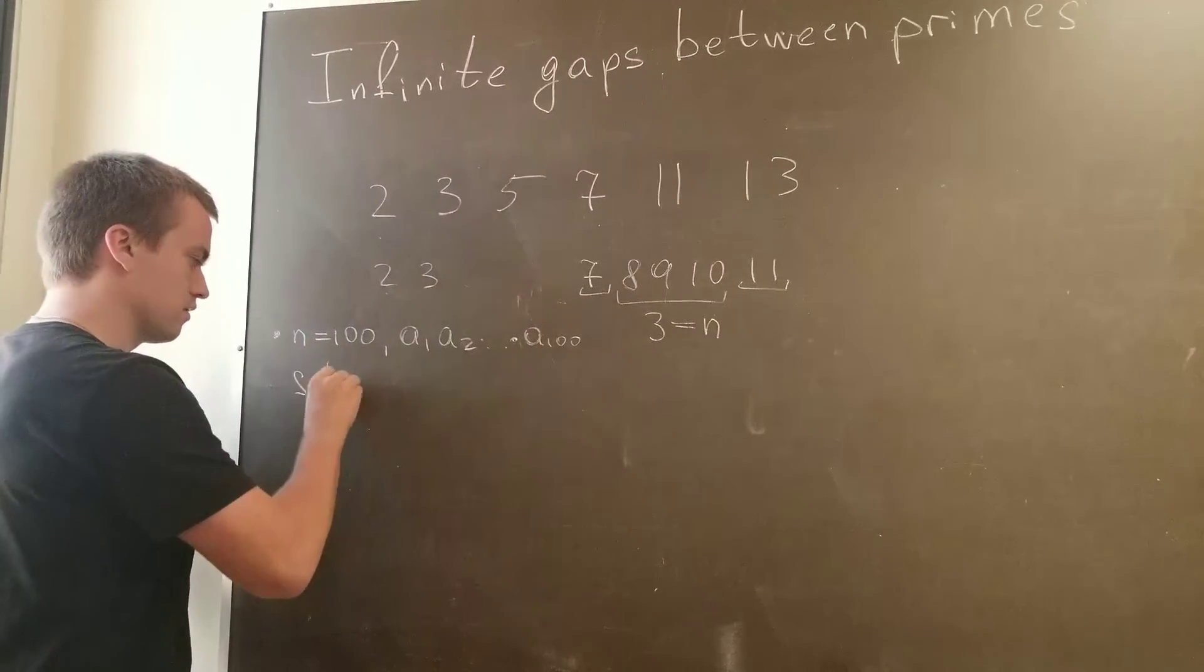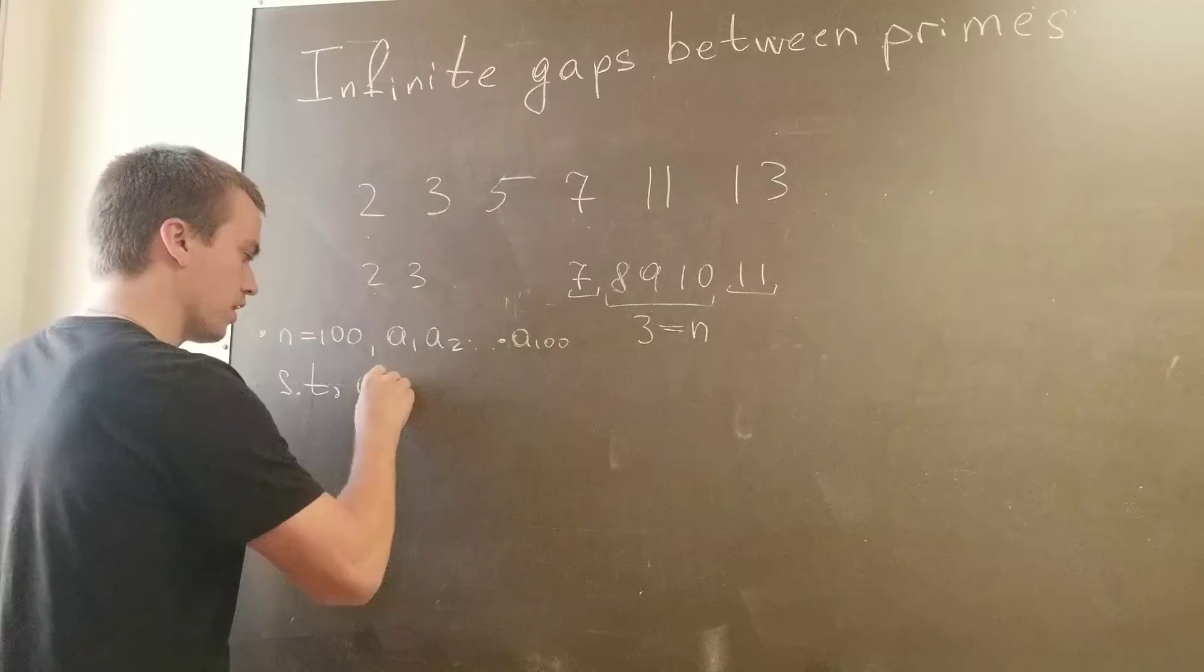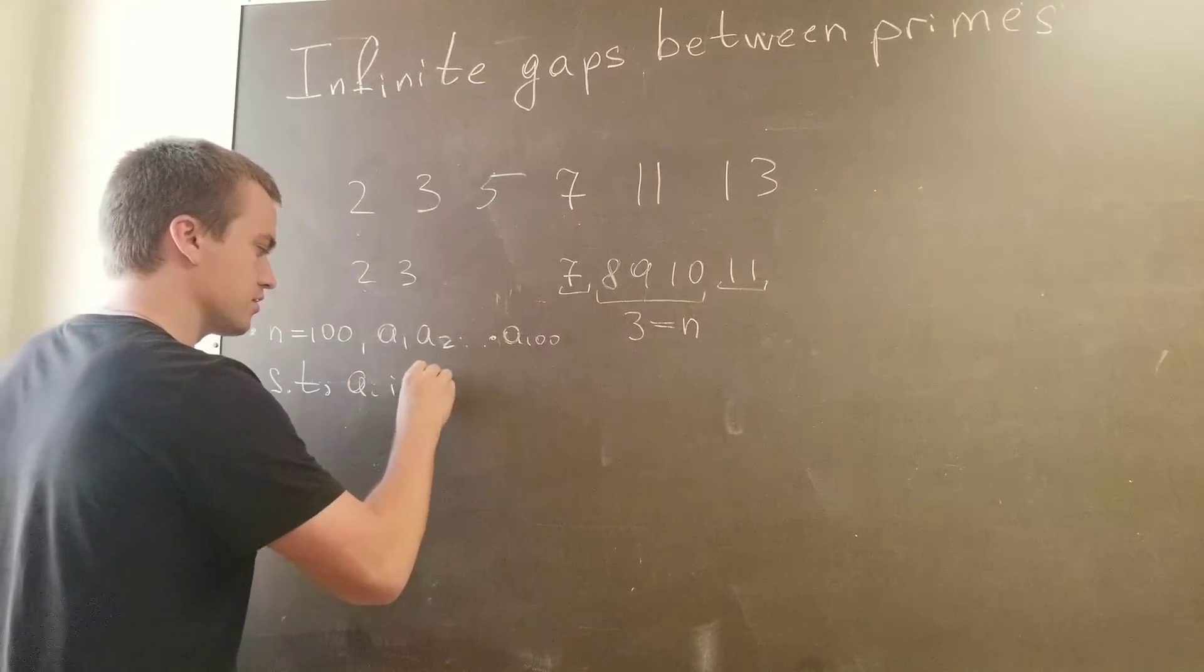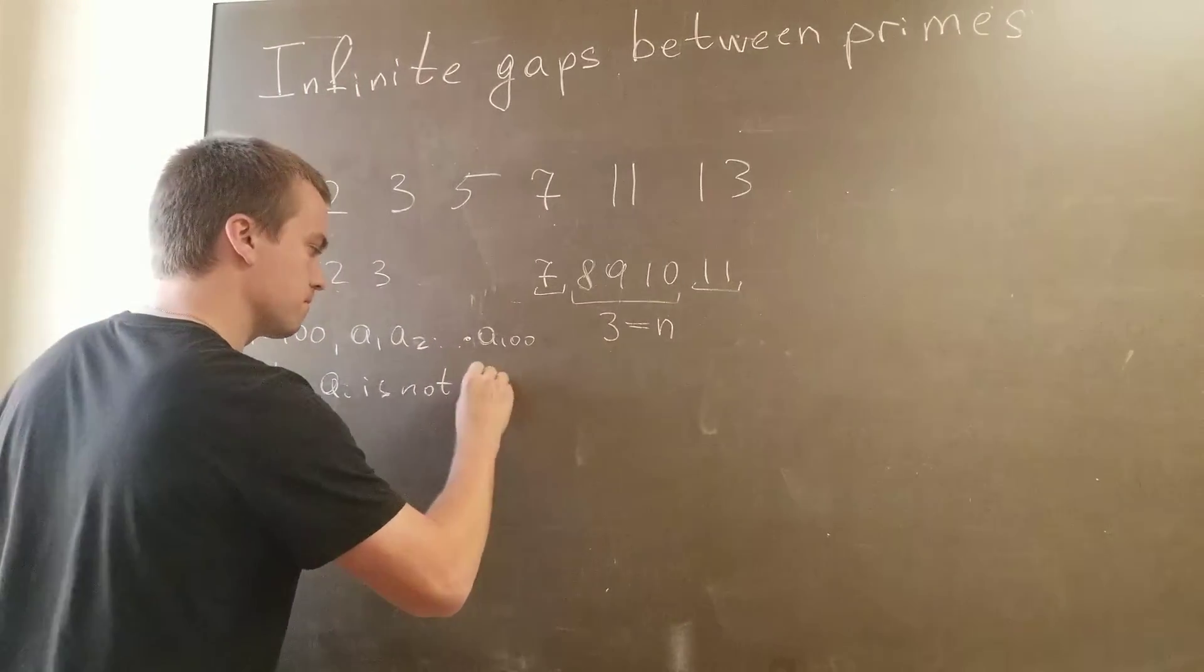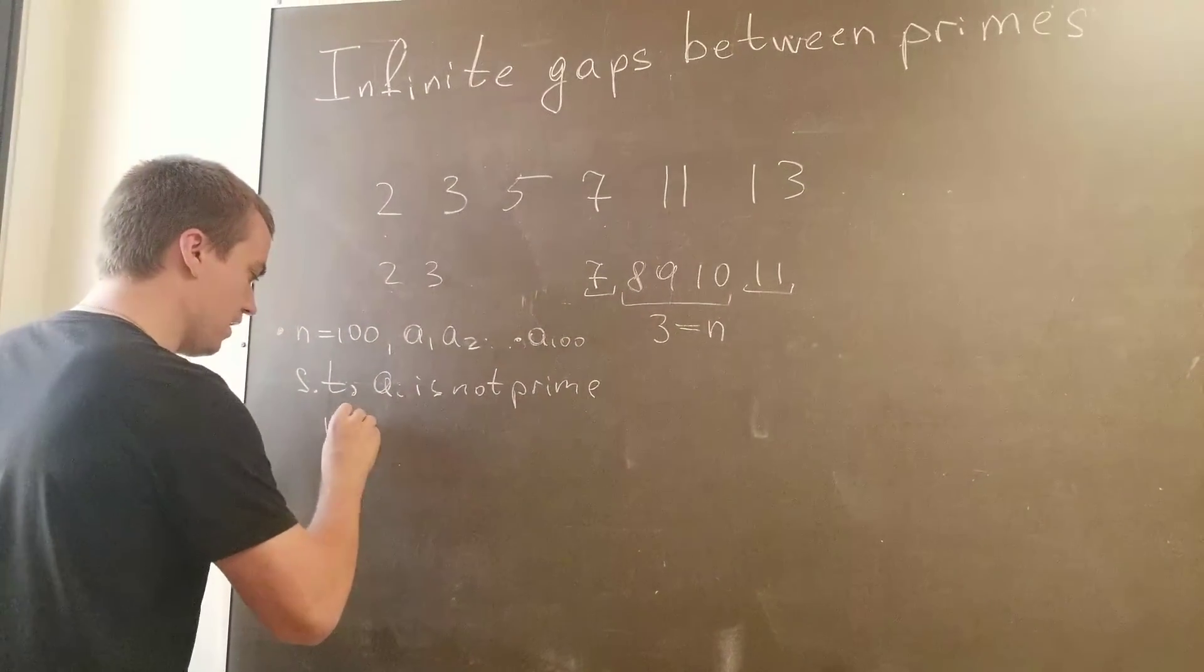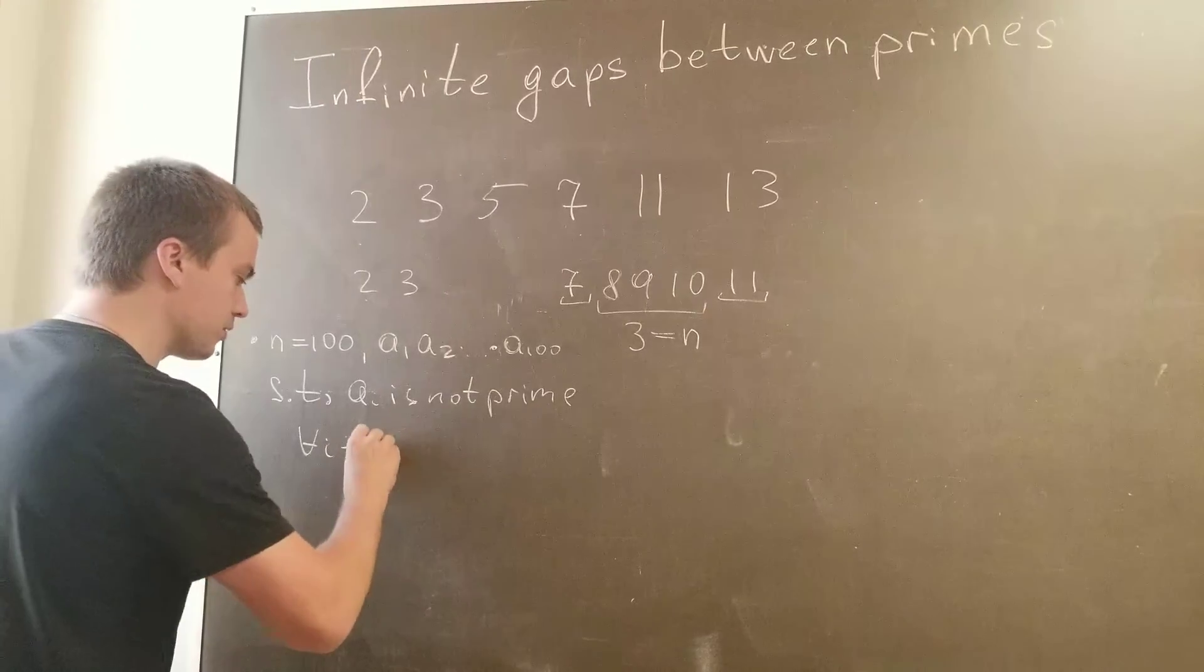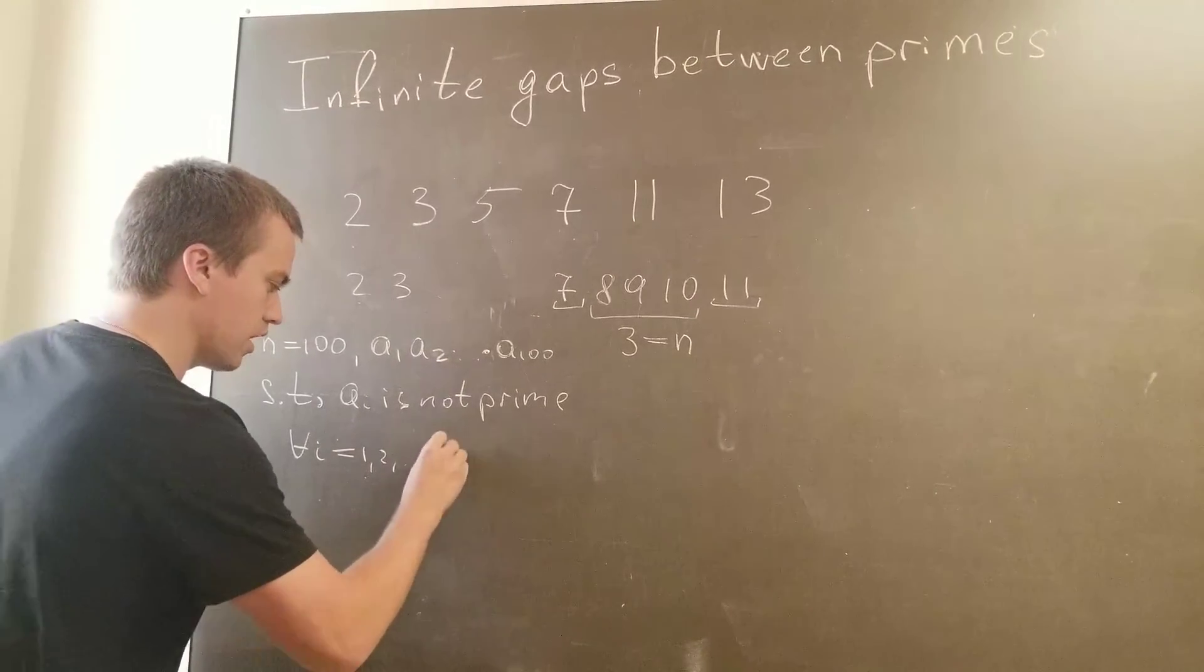Such that each of these numbers, a_i, is not prime for any i, for any i equal to 1, 2, and 100.